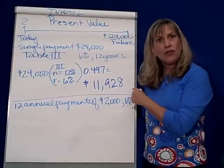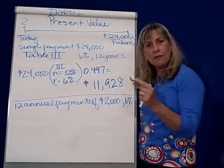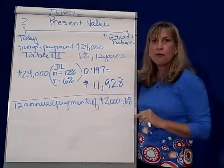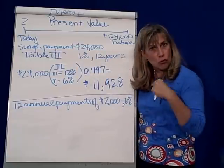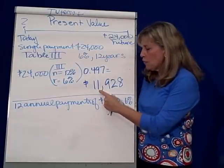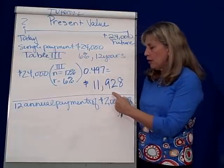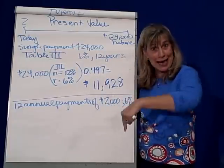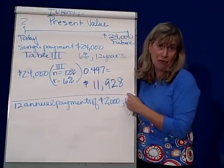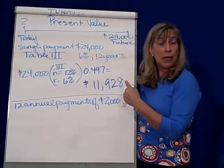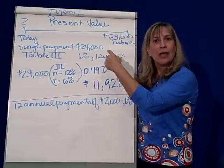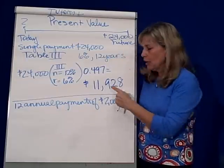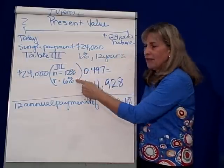So what does that mean? If grandma came to you and said, 'I'll give you $24,000 twelve years from now, or I'll give you $11,928 today,' you'd say whatever — because it has the same value given these assumptions.